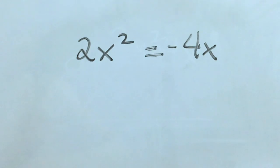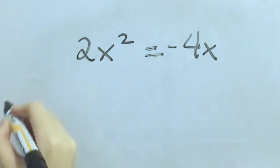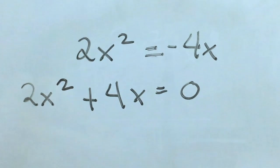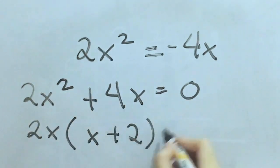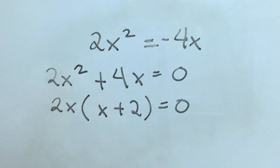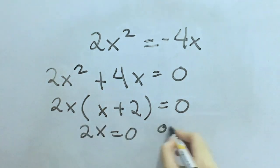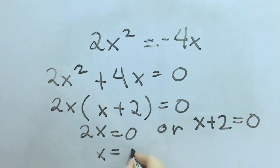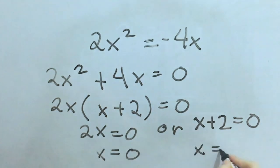Take a look at this equation. For the first step, rewrite the equation in general form. For the second step, factor the left side of the equation applying the appropriate method. And for the third step, apply the zero product property by equating each factor to zero. The roots are zero and negative two.